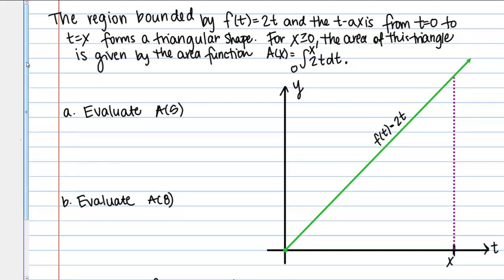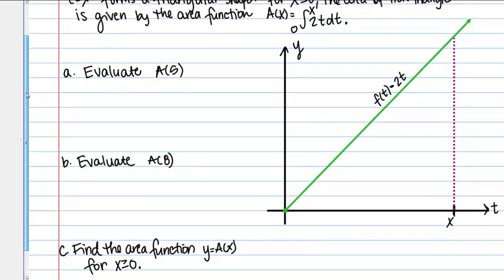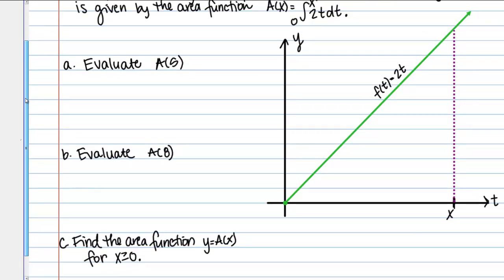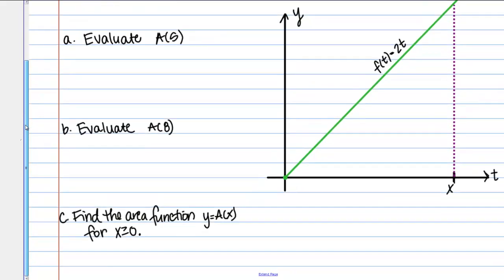Then we're asked to evaluate several things based on this information. Part a, evaluate A(5). Part b, evaluate A(8). And part c, find the area function y = A(x) for x ≥ 0.